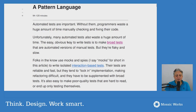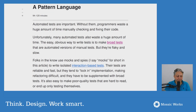He goes on to say that unfortunately many automated tests also waste a huge amount of time. The easy, obvious way to write tests is to make broad tests — automated versions of manual tests — but they're flaky and slow. By broad tests he's talking about end-to-end tests or full-stack tests: tests that run at the entry of the system, go through everything, and maybe end up in storage or through multiple components.